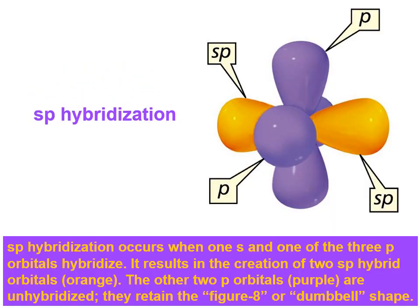Let's end with this slide here. SP hybridization occurs when one S and one of the three P orbitals hybridize. It results in the creation of two SP hybrid orbitals, which are colored orange in this picture. The other two P orbitals, which are purple, are unhybridized. They retain the figure eight or dumbbell shape. What we have on the left, this orange orbital, that's an SP hybrid orbital. This one is a second SP hybrid orbital. The purple, a P orbital, is kind of a dumbbell or figure eight shape. So there's one of them right there going up and down. And there's another one coming towards us and going back into the screen. That's the second unhybridized P orbital.